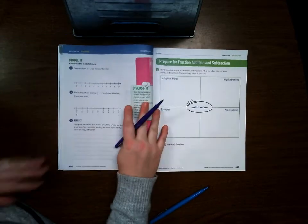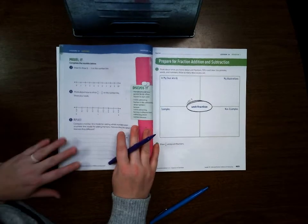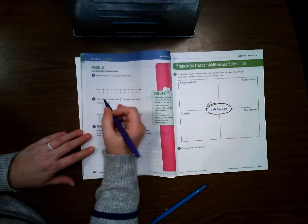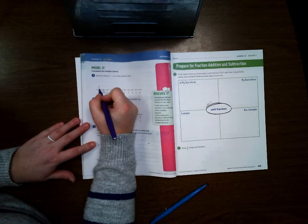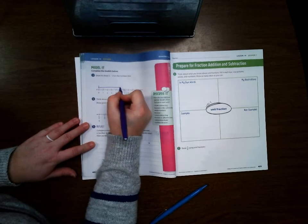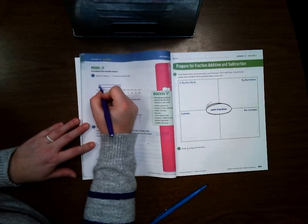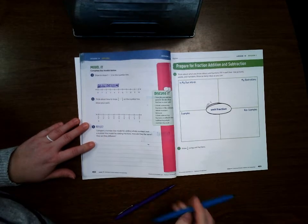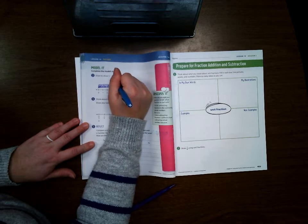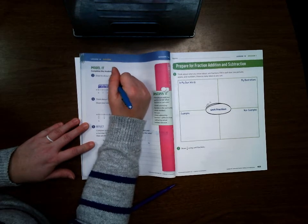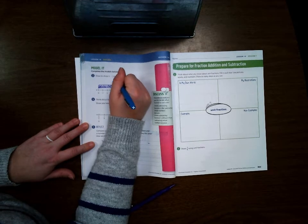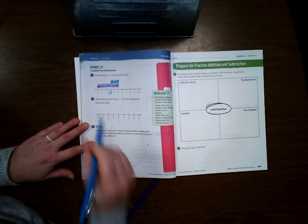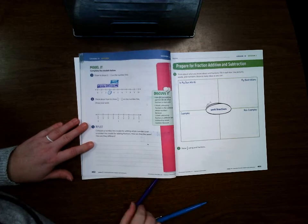Okay, now on 402 it's wanting us to draw 5 minus 2. So we're going to start with our 5 on our number line, and then we're going to subtract 2. But we're going to start at the 5 and we're going to go back 2. So when we subtract 2 from 5, we finish on 3.